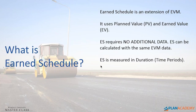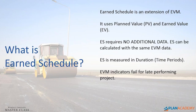Some of the Earned Value Management indicators fail for late performing projects, but the Earned Schedule indicators are reliable. They stand up properly when projects are late and past their deadline. They measure how the project actually performed in the past and forecast future time performance. This is one of the main reasons that Earned Schedule is really great.